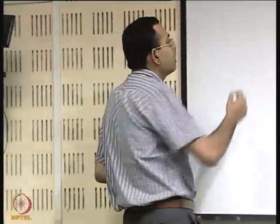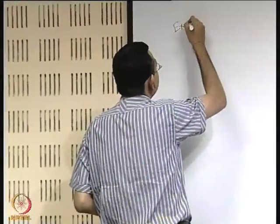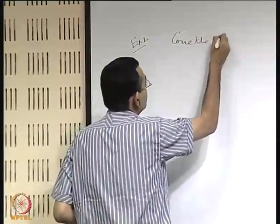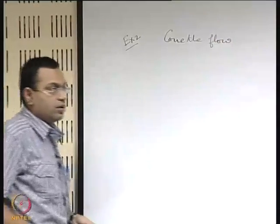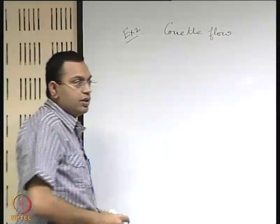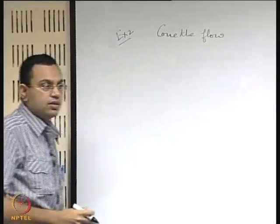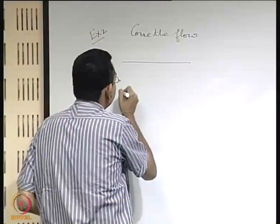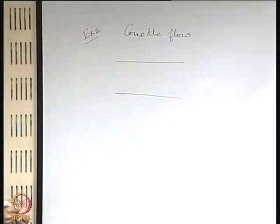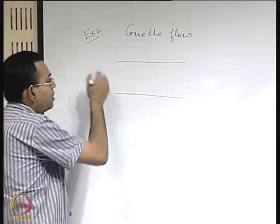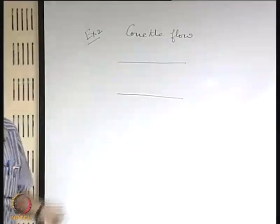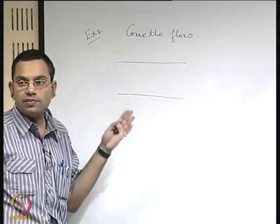We were discussing the exact solutions of the Navier-Stokes equation and will now consider a second example known as Couette flow. What is the difference between this and the plane Poiseuille flow from yesterday's class? If you have two parallel plates and a pressure gradient acting on the fluid, the fully developed part of that flow is called plane Poiseuille flow.